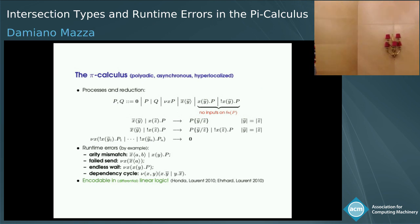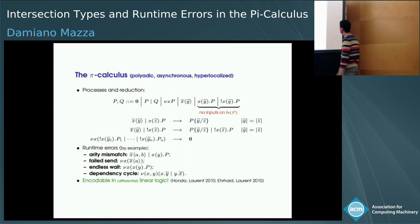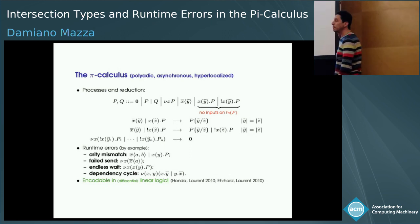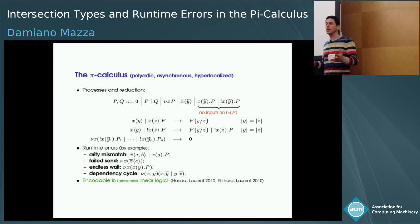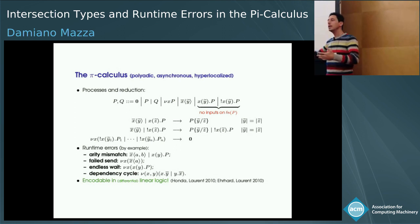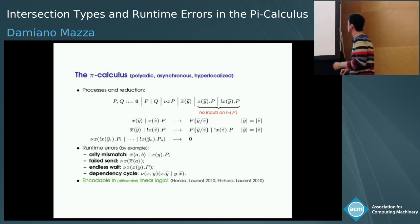The pi calculus we're considering here is this fragment — it's very standard — it's polyadic and asynchronous. The only non-standard feature is this hyper-localization thing, which means that when you do an input, inside the continuation you cannot have free names that are subjects of input prefixes — you cannot do a free input inside the continuation. It might seem like a strong restriction, but actually it's not really: the standard encodings of the lambda and lambda mu calculus all land in this fragment, and there is also a lot of genuinely concurrent behavior here — races, concurrent access to shared resources, locks, semaphores — so it's a reasonably expressive fragment.